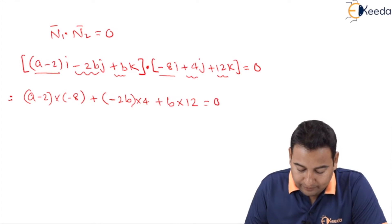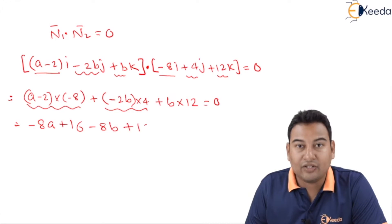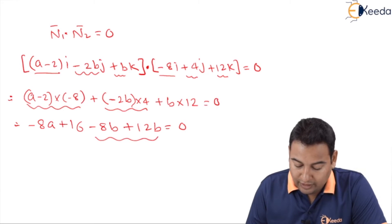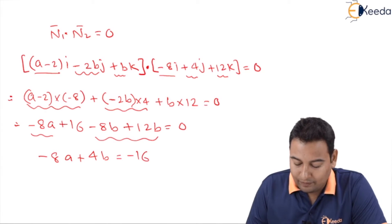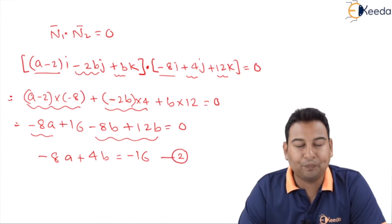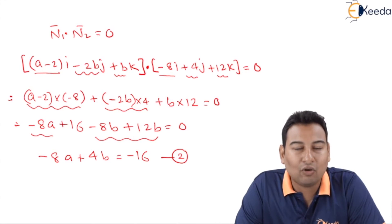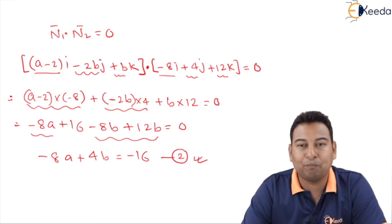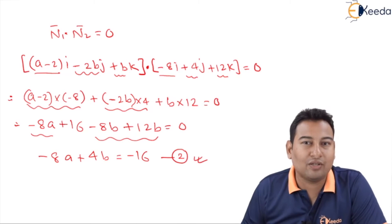So: (a−2)(−8) + (−2b)(4) + (b)(12) = 0. Opening the brackets: −8a + 16 − 8b + 12b = 0, which simplifies to −8a + 4b = −16. This is equation number 2. From the orthogonality condition n1 bar dot n2 bar = 0, we got one equation, but for finding a and b we need two equations.